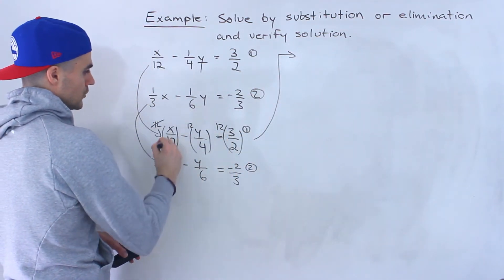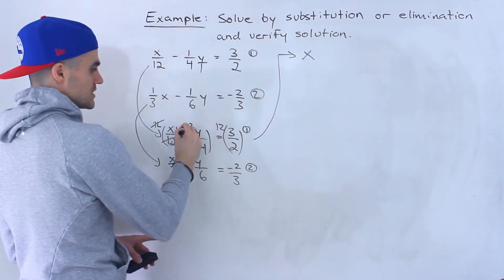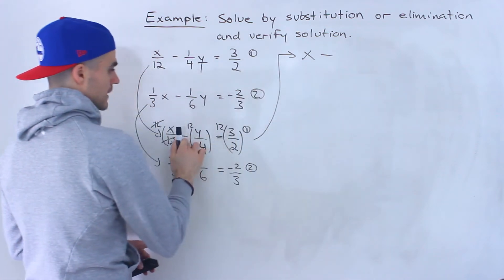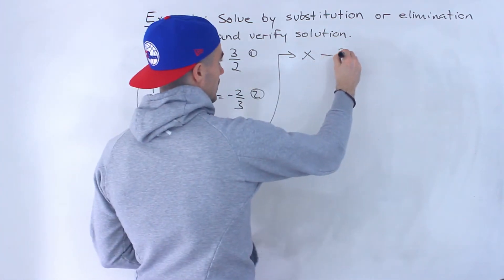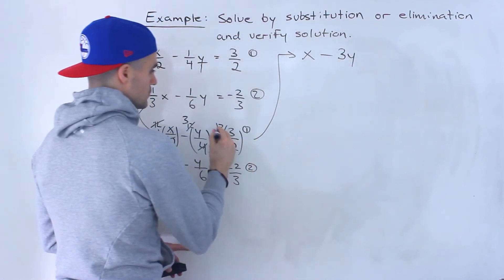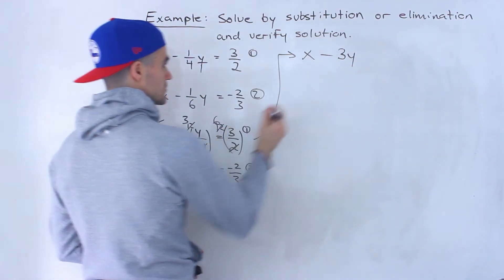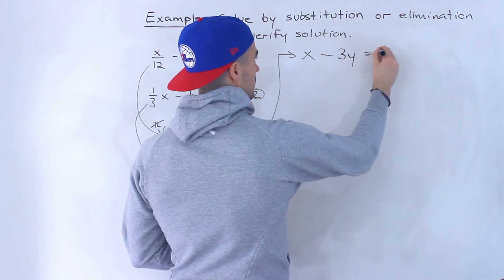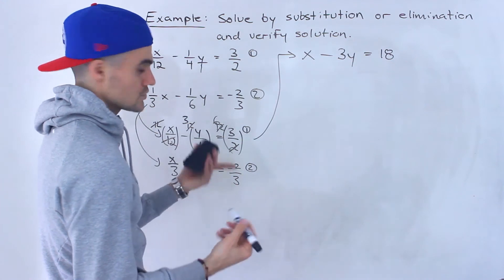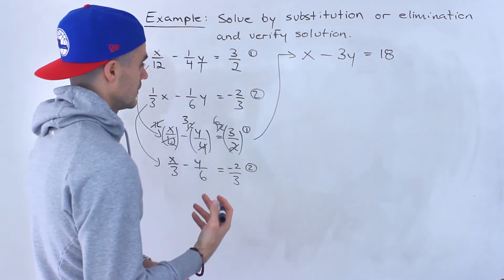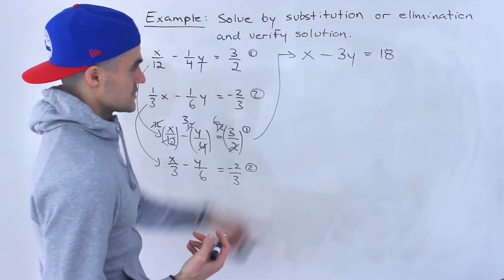12 divided by 12. Notice those would cancel so we would just have an x right there. 4 goes into 12, sorry there's this minus here. 4 goes into 12 3 times. So we'll have 3y. Then 2 goes into 12, 6 times, 6 times 3 is 18. Another way to do this just 12 times 3 over 2 would give you 18. It would be like 36 over 2 which is 18.